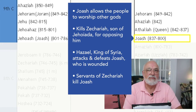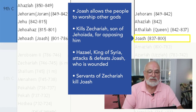Meanwhile, Hazael, king of Syria, attacks and defeats Jehoash, who is wounded. Servants of Zechariah finish him off and kill Jehoash, who is now a grown king. Jehoash's son Amaziah becomes king.